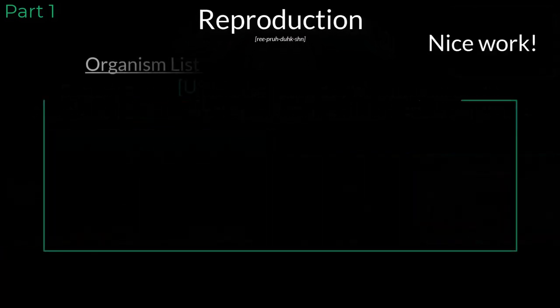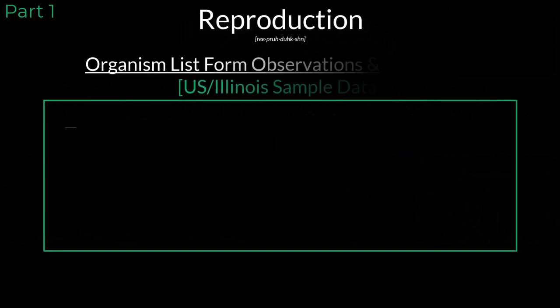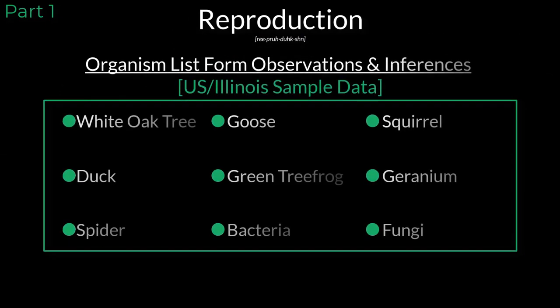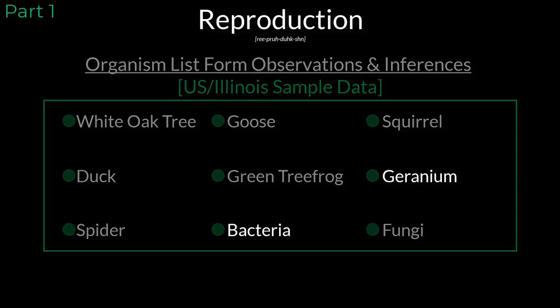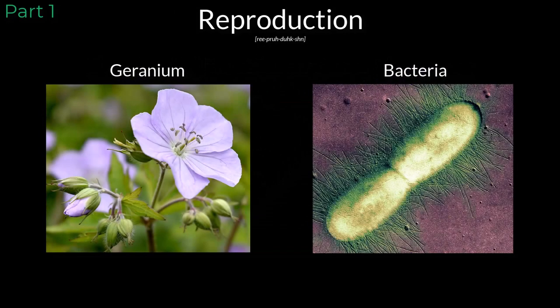Nice work! You now have a list of all the living things around you. Now what we are going to do is think about each organism in terms of reproduction, because the truth is not every organism reproduces the same way. Take a flowering plant and a bacteria as an example, which may have been organisms found on your list.